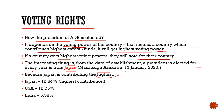In terms of capital contribution: Japan contributes 12.84%, which is the highest. USA contributes 12.75%, and India contributes 5.38%.